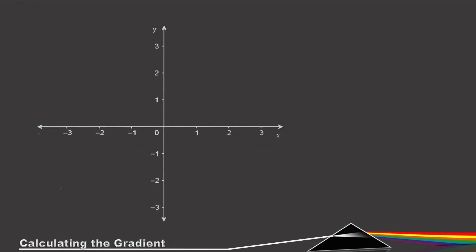When it comes to gradients we are concerned with straight lines because the gradient is a property of the straight line. Basically what the gradient tells us about the straight line is its steepness. Think of it like a mountain you're climbing — a gradient of three has greater steepness than a gradient of one or a half. The higher the gradient, the steeper the slope. If the gradient is negative, it slopes to the other side.